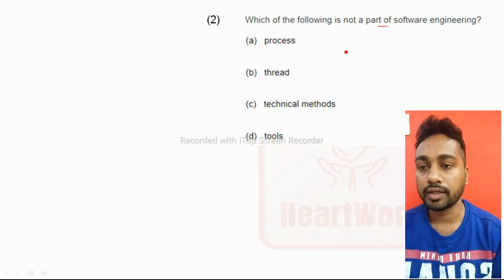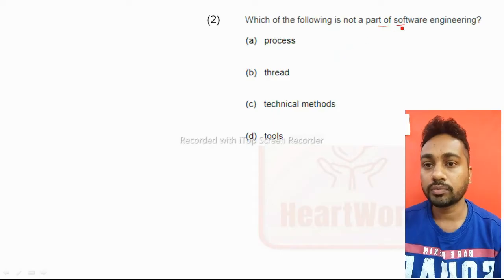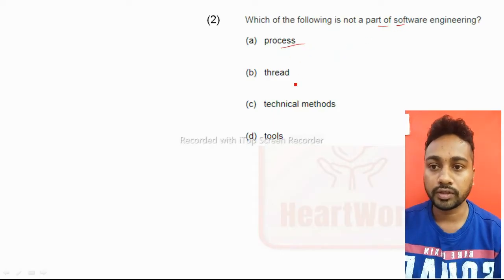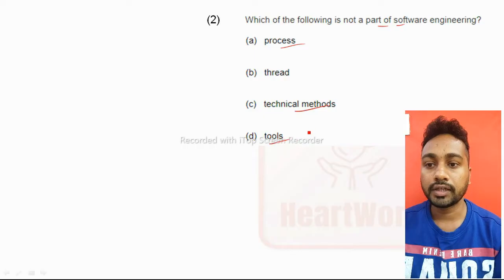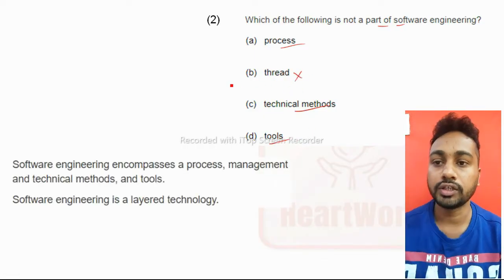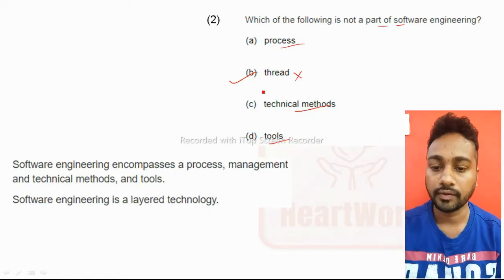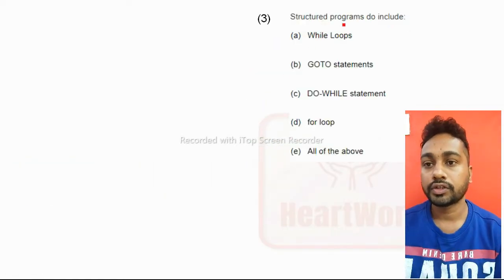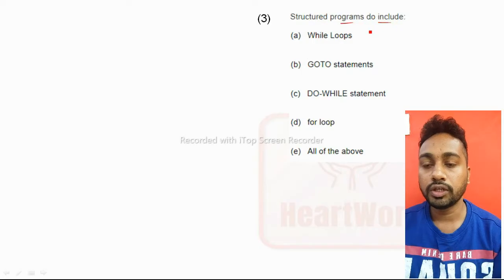Which of the following is not a part of software engineering? Software engineer generally is a part of process, technical methods and tools. Thread is not a part of software engineering, so option B is the right answer.